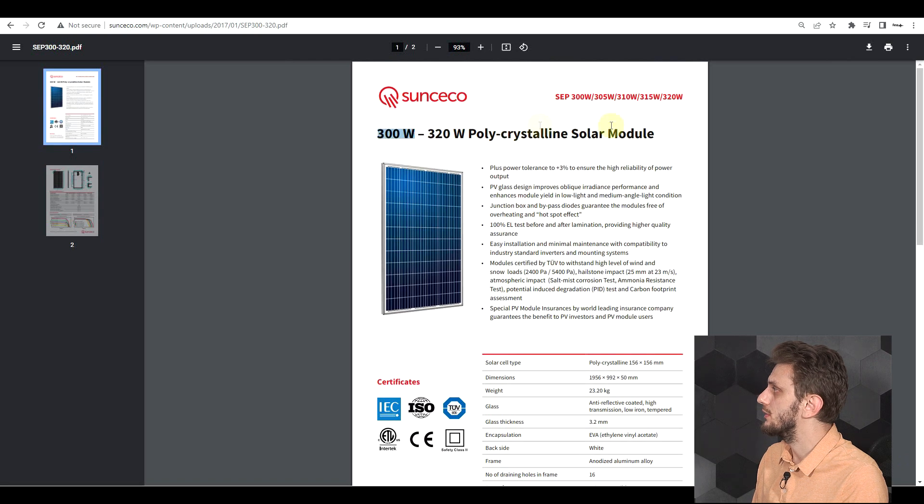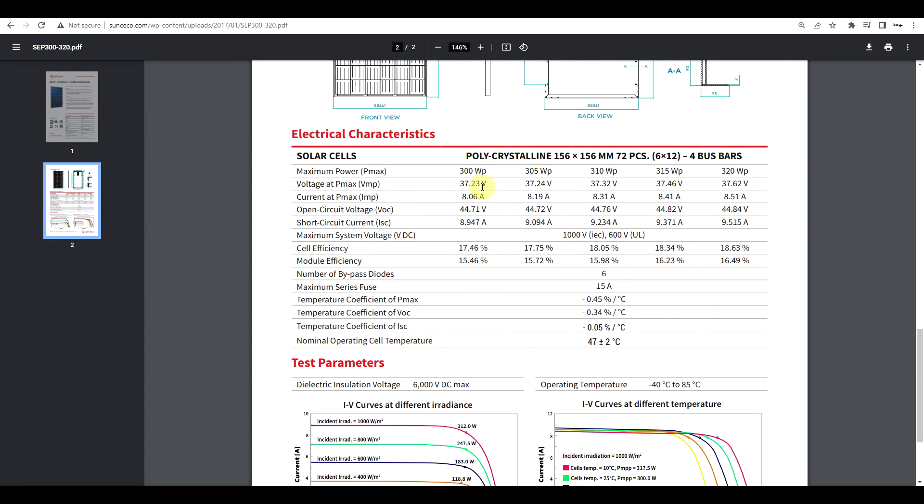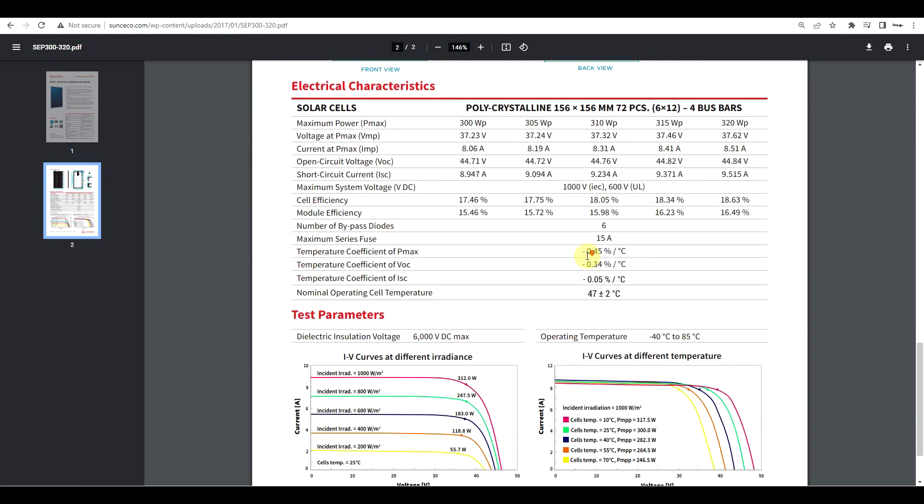Now for the next example I will be using some datasheet parameters. I've chosen this SunSeqo solar panel, 300 watt polycrystalline module, and the nice thing about this datasheet is that other than the various parameters like maximum power point voltage and current, open circuit voltage, short circuit current and the thermal parameters, we also get a set of graphs. So we'll have something to compare our simulation model to.